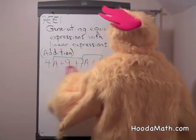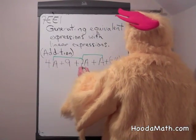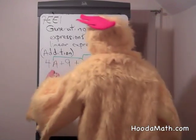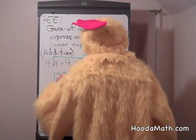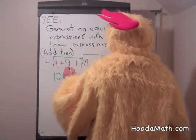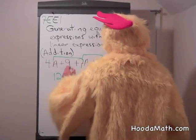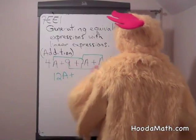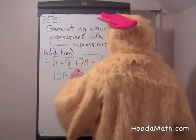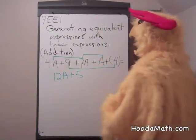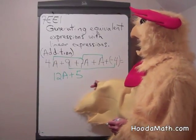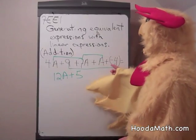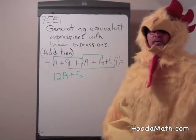And 4a plus 7a equals 11a plus a, which is also 1a, gives us 12a. And we're going to add that to 9 plus negative 4. 9 plus negative 4 equals positive 5. So 12a plus 5 is an equivalent expression to 4a plus 9 plus 7a plus a plus negative 4.